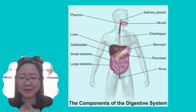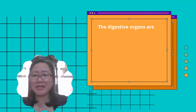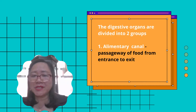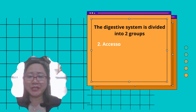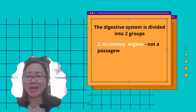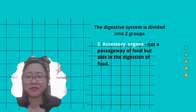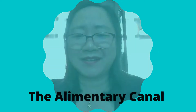The digestive organs are divided into two groups. One is the alimentary canal — the passageway of food from entrance to exit. And number two, accessory organs — not the passageway of food, but aids in the digestion of food. Let us now study the alimentary canal.